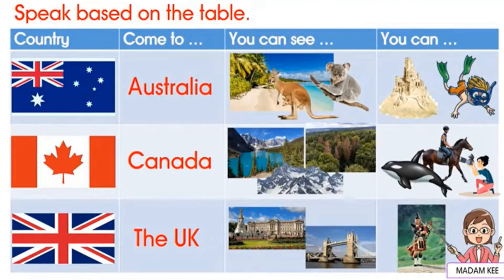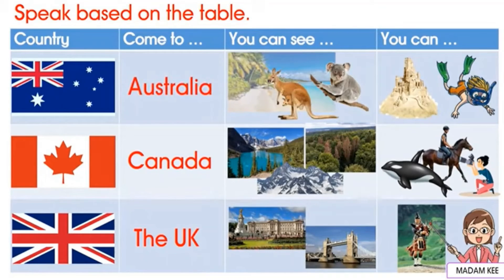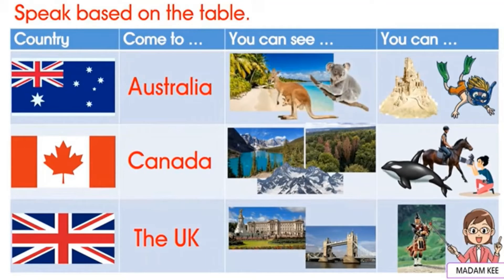Let's speak based on the table. Come to Australia. You can see beautiful beaches. You can see kangaroos and koalas. You can swim and snorkel in the sea.